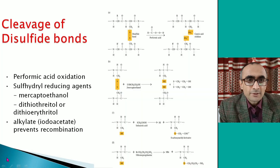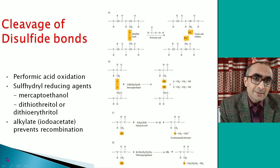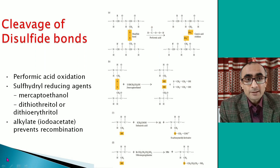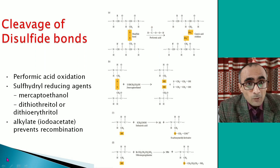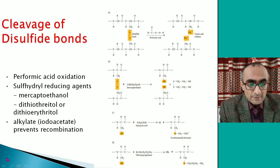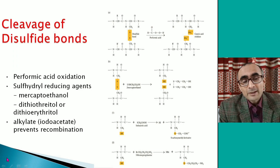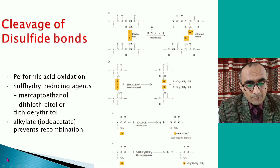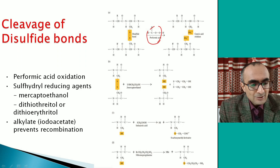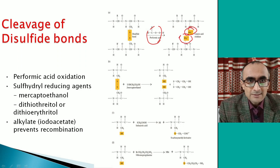If polypeptide chains are linked by disulfide bonds, you need to separate those chains by breaking the disulfide bonds. There are different methods of breaking disulfide bonds. A disulfide bond is between the two side chains of two cysteine amino acids. It can be broken using performic acid, which oxidizes the disulfide bond and converts cysteine into cysteic acid — a permanent separation of cysteines.